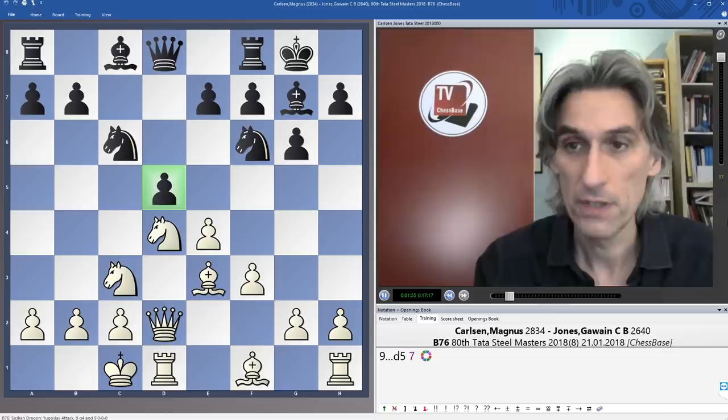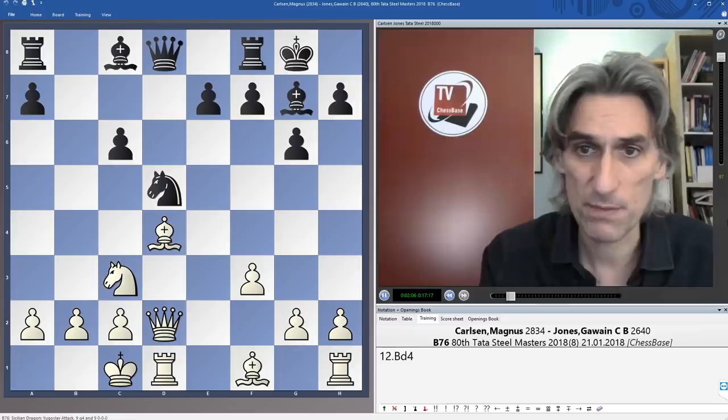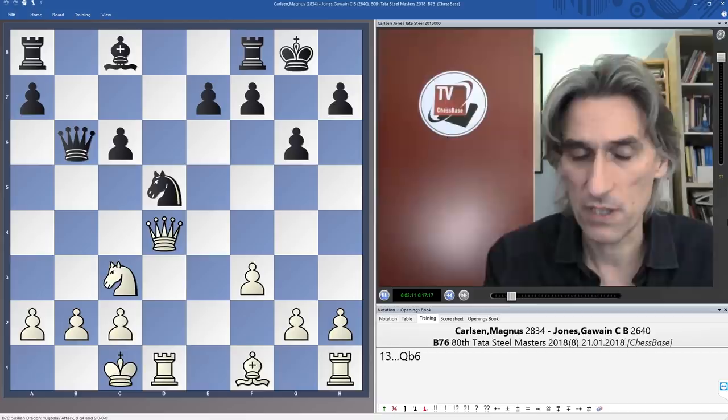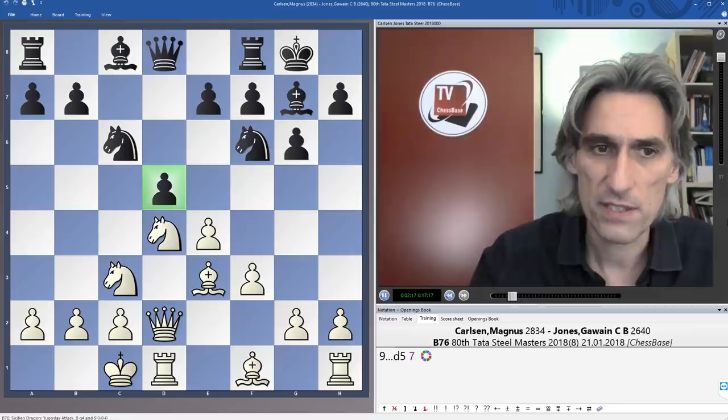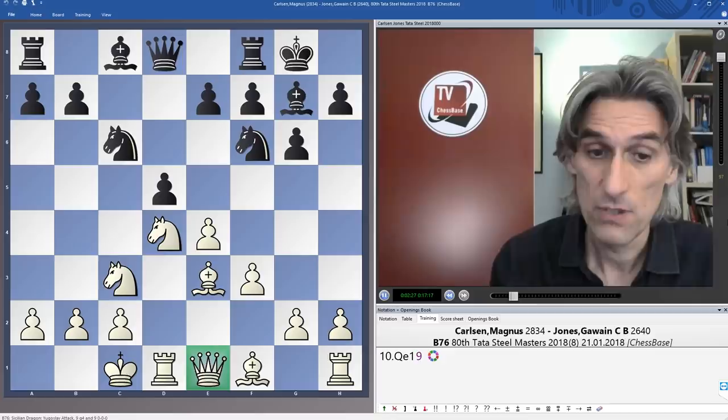And here, Gawain is an expert in this particular line. e5 is possible, but this is a very popular line which Gawain knows extremely well with black. But Carlsen played, instead of capturing on d5, he just came back with a queen. And this is also one of the main lines, and in some ways much sharper, because it keeps more tension in the position, more pieces on the board.